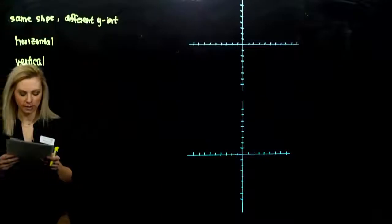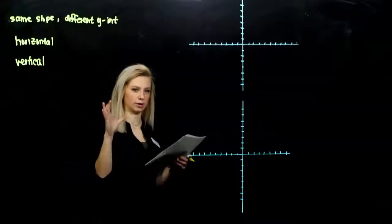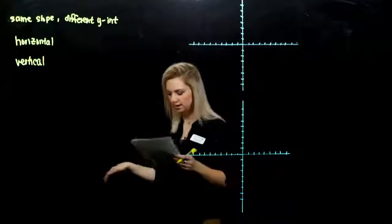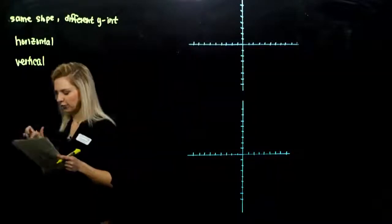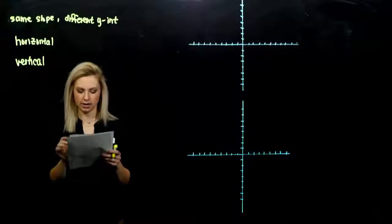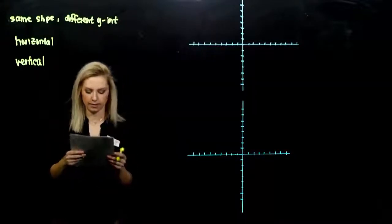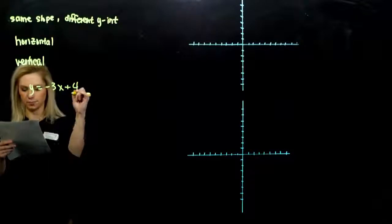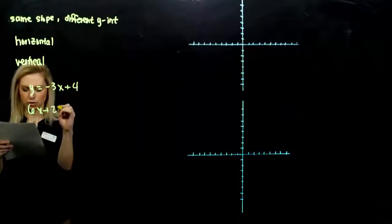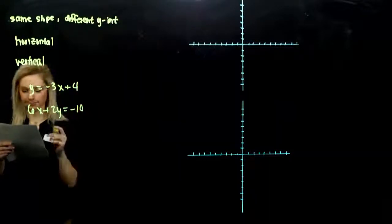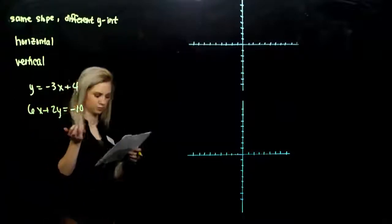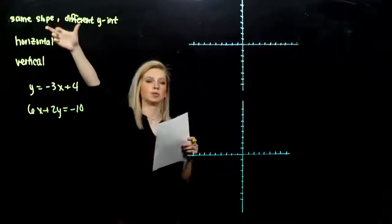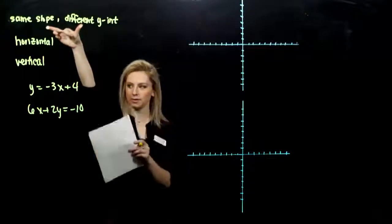So we want to be able to show algebraically the relationship between lines without having to draw pictures all the time. Save us some time. So, first example. Algebraically determine whether the graphs of the lines, y equals minus 3x plus 4, and 6x plus 2y is minus 10, are parallel.